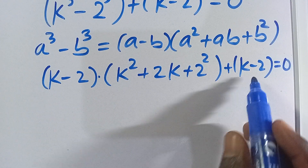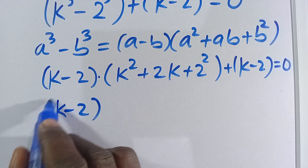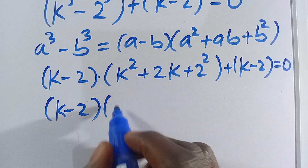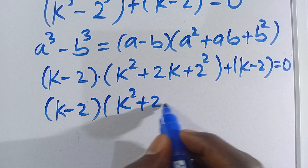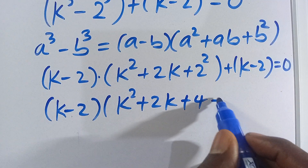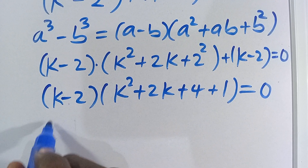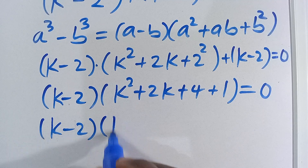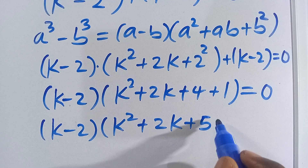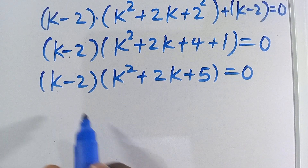We have k minus 2 in common, so we factor it out. Dividing through by k minus 2, we are left with k² plus 2k plus 4, and then the k minus 2 divided by k minus 2 gives us plus 1. So we get k² plus 2k plus 4 plus 1, which is k² plus 2k plus 5.